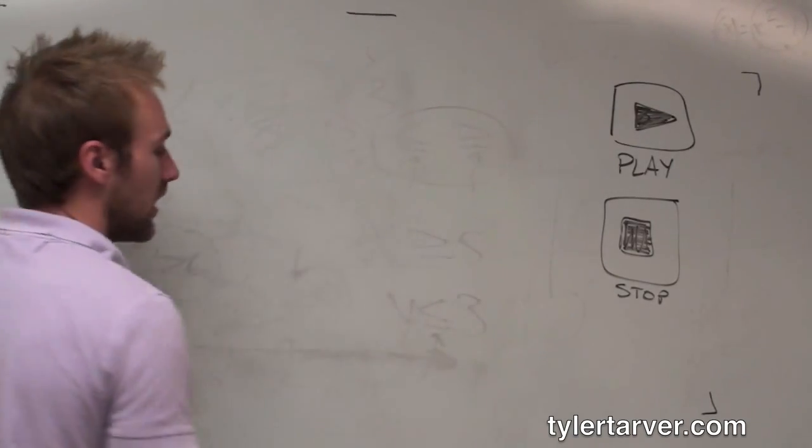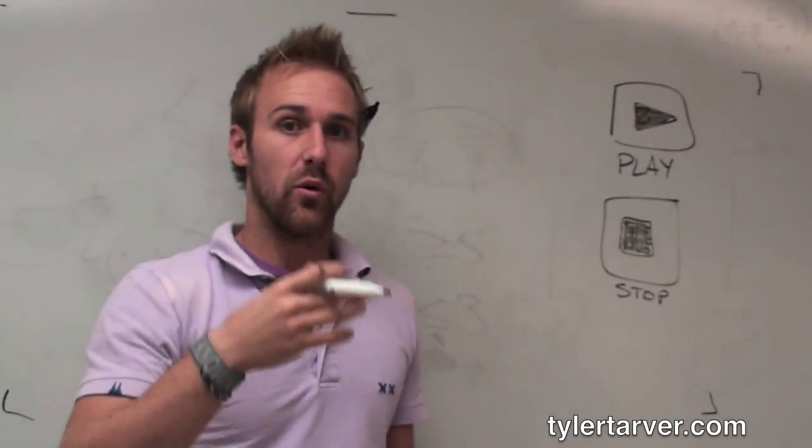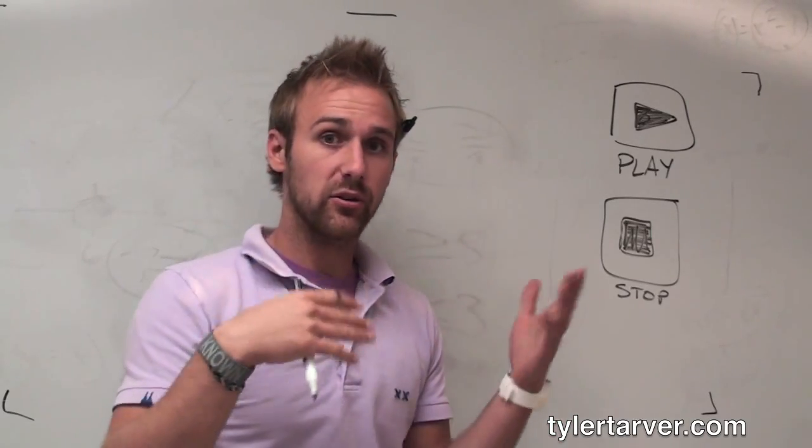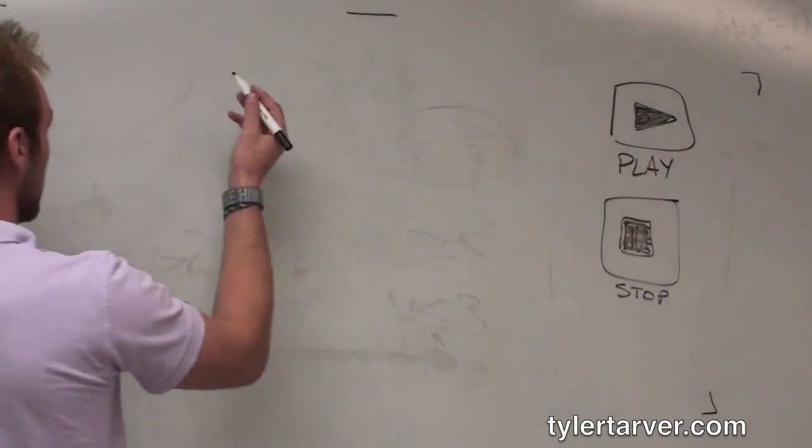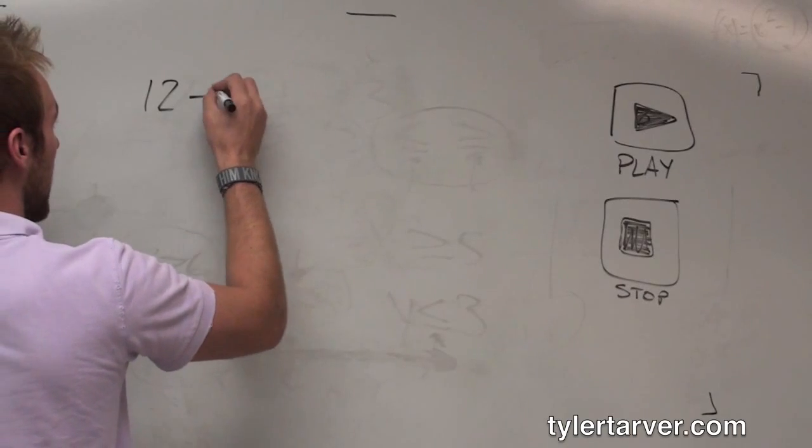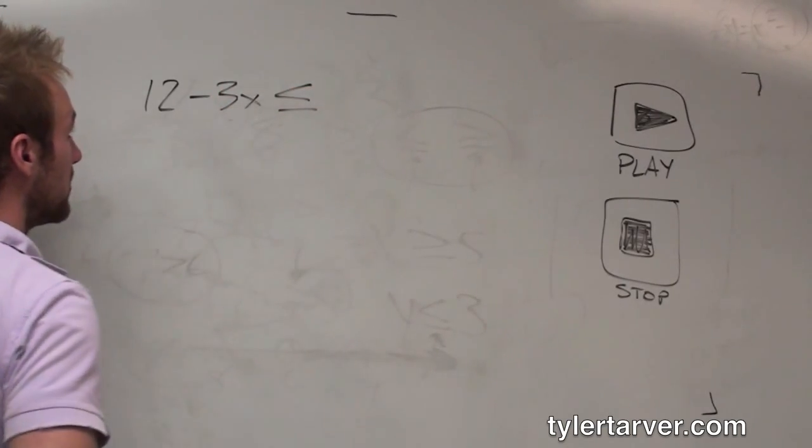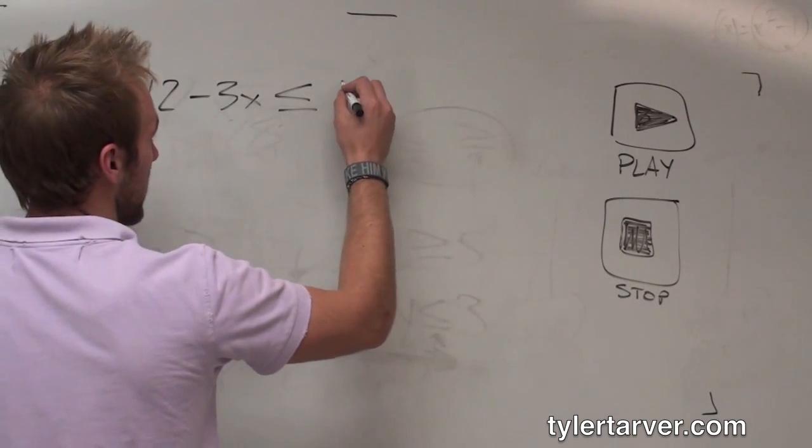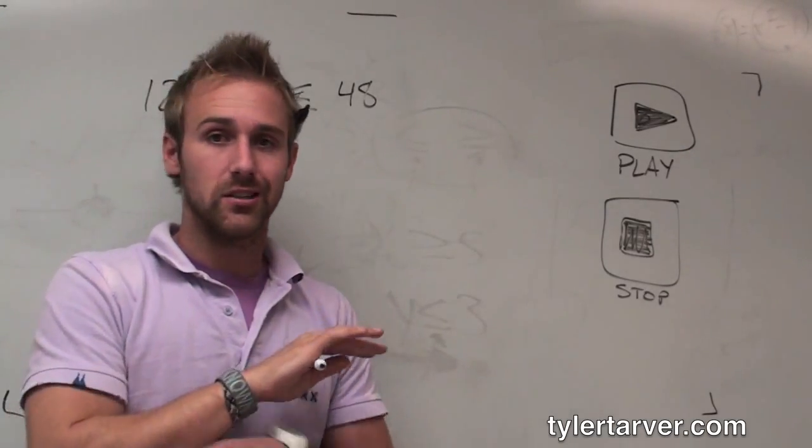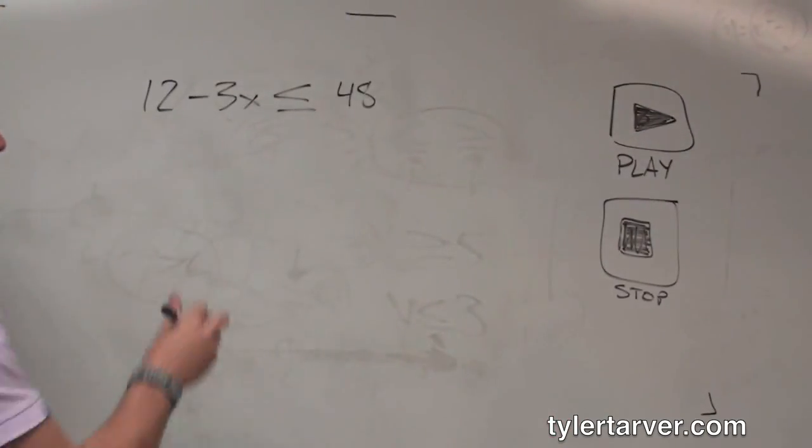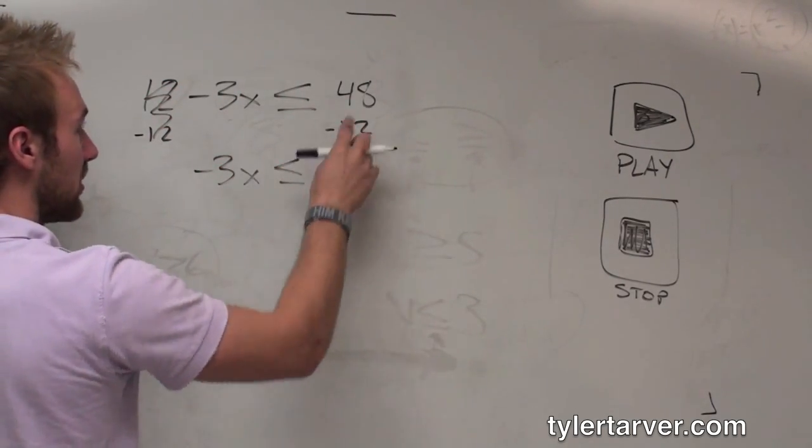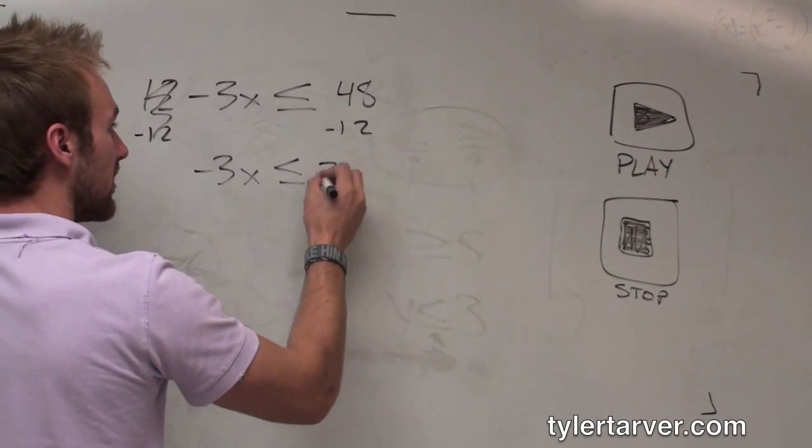Now, let's say you want to do - I told you earlier, I said there's only one difference between solving an equation whenever it's an equality with an equal sign and an inequality where it's got like greater than or less than or greater than or equal to or less than or equal to. Only one difference. We're about to learn that. Let's say we've got 12 minus 3x is less than or equal to 48. Now, I want to start off. I want to solve it just like it's a regular equation. I would get rid of my 12 first, subtract 12 from both sides, cancel down here, bring down the negative 3x is less than or equal to 48 minus 12 is 36.